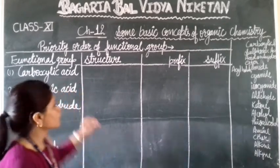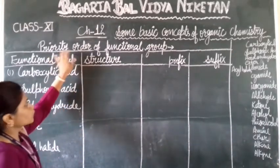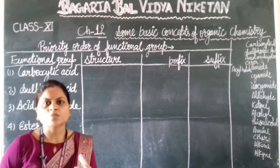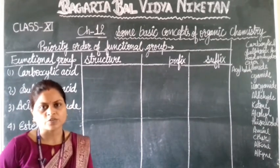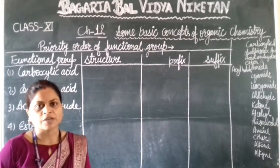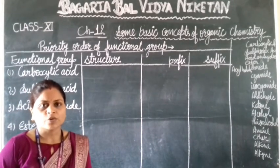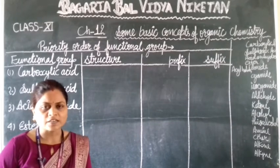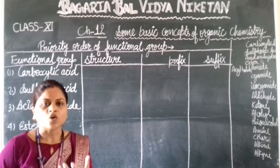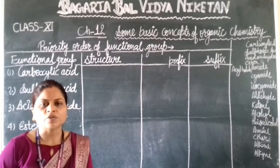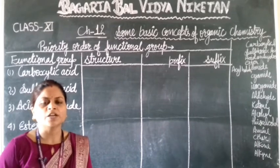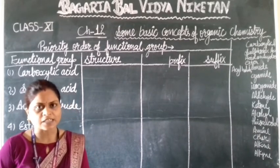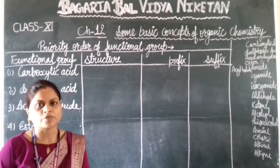Today we will discuss the priority order of functional groups. The priority order of functional groups decides the nomenclature — that is, how the organic compound is named.